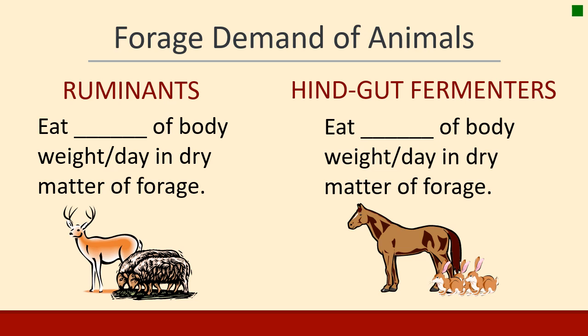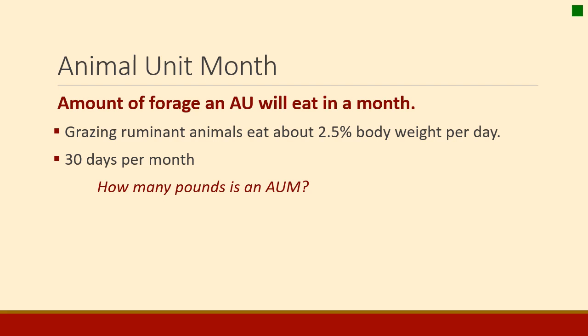Another way to look at animal demand is to understand how much animals eat in a day. Ruminants eat about 2.5% of their body weight each day in dry matter forage. Horses and rabbits are hindgut fermenters, and because of their digestive system they eat more — about 3% of their body weight per day. This leads us to the term animal unit month, or AUM: the amount of forage an animal unit will eat in a month.